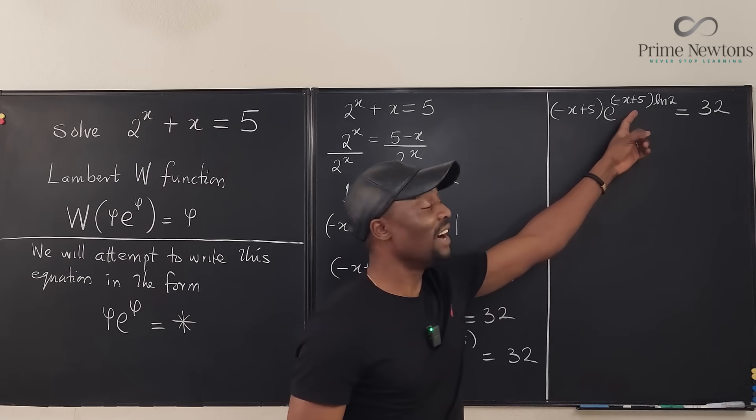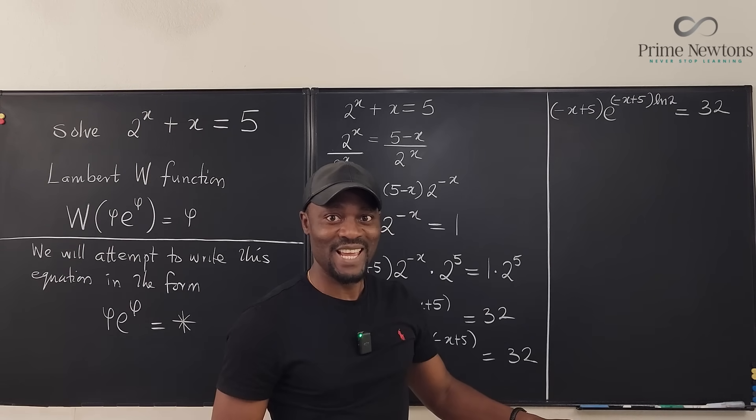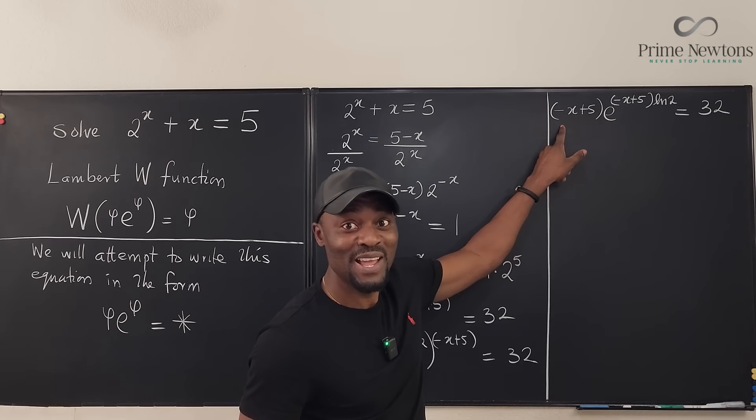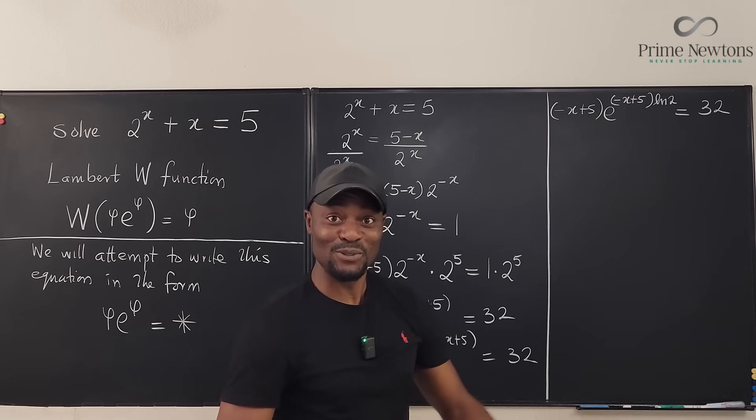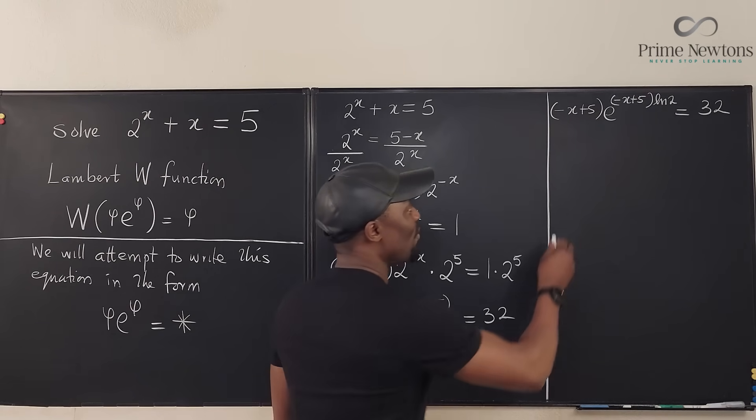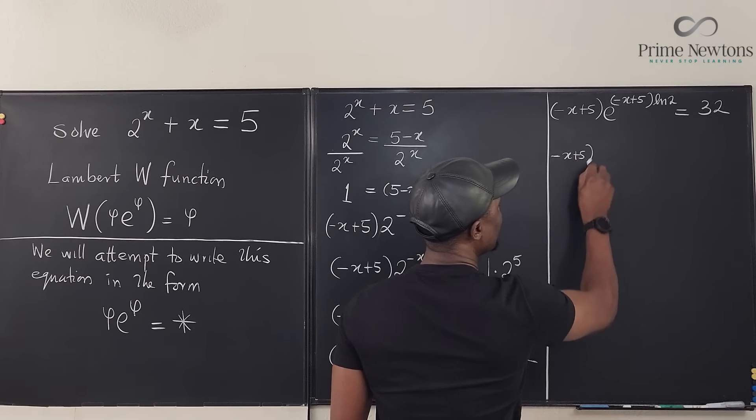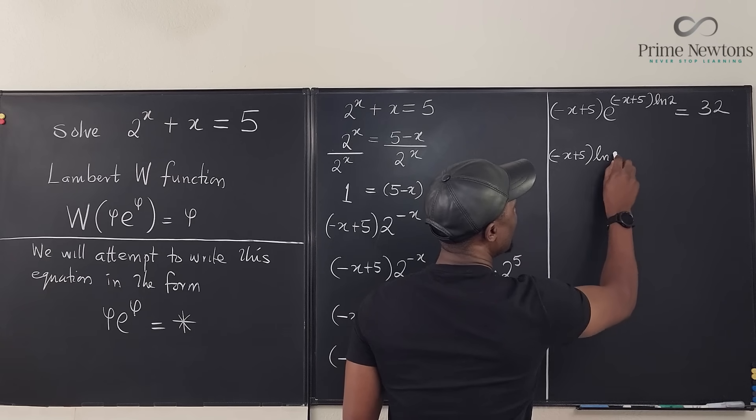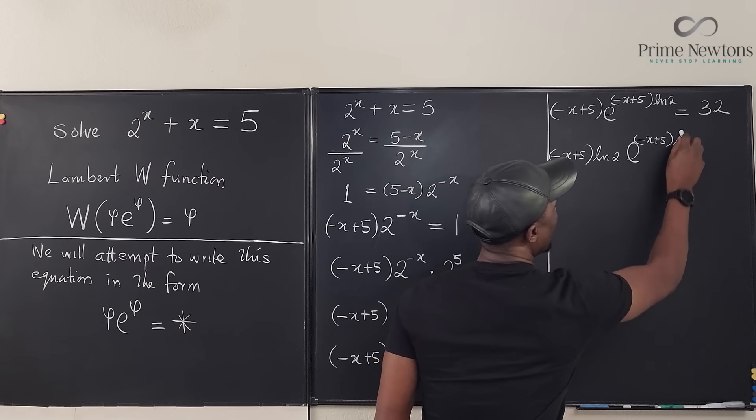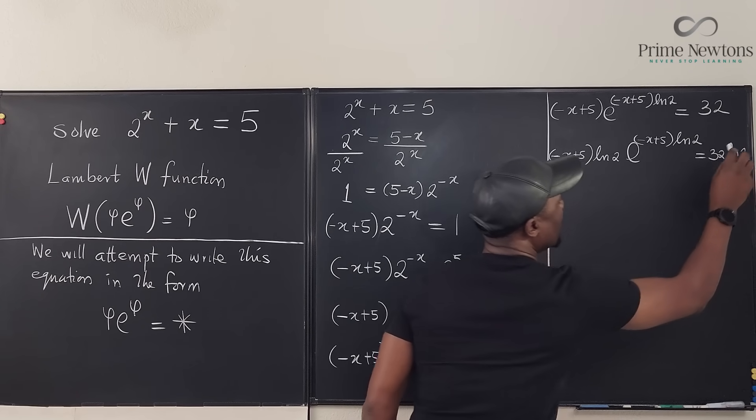But what we have done has changed this. What is here is no longer what is here. In order to make this the same as this, we have to multiply this by ln 2. And that means we have to go here and multiply it also by ln 2. So it's going to be (-x + 5)ln 2 times e^[(-x + 5)ln 2] = 32 ln 2. Now we have come to our conclusion.